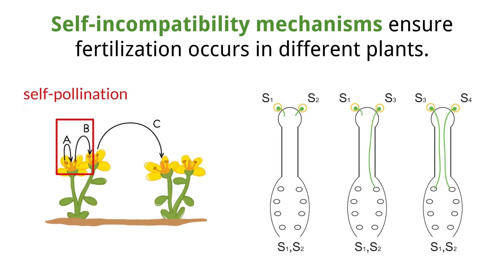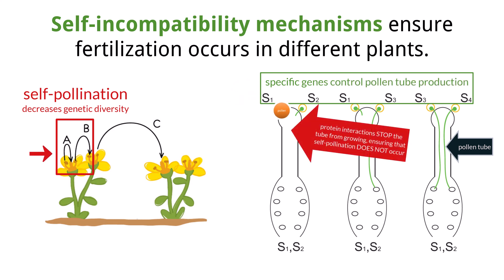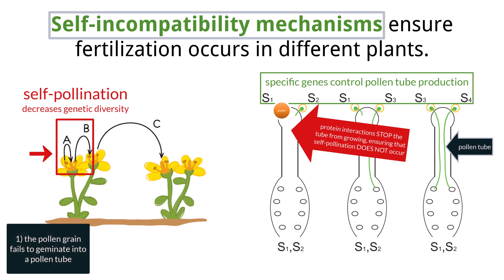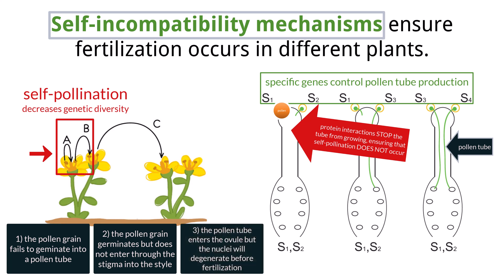Self-pollination leads to inbreeding, which decreases genetic diversity and vigor. Many plants use the production of the pollen tube as a mechanism to control self-pollination. There are a set of genes that control the production of the pollen tube, and when pollen lands on the stigma of the same plant, protein interactions will reduce or stop the growth of the pollen tube. This is a self-incompatibility mechanism, and while these specific mechanisms may differ from species to species, the following can occur: the pollen grain fails to germinate into a pollen tube; the pollen grain may germinate but not enter through the stigma into the style; or the pollen tube enters the ovule but the nuclei will degenerate before fertilization.